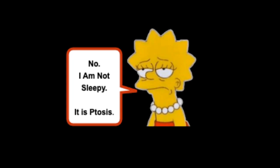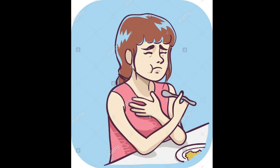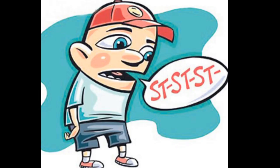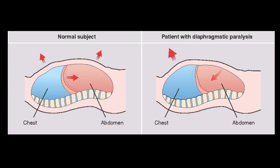Double vision and droopy eyelids due to weakness of the ocular muscles are seen. There is difficulty in swallowing due to weakness of the throat muscles, and difficulty in speech due to weakness of the speech muscles. In severe conditions, there is paralysis of the muscles of the respiratory system, including paralysis of the diaphragm, as you can see here.